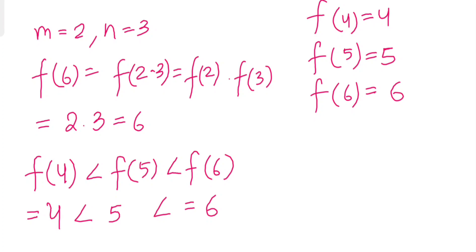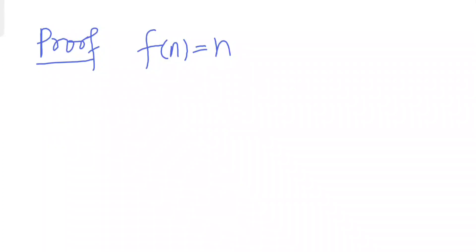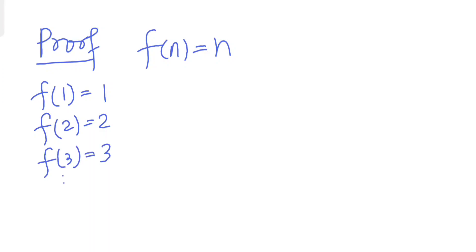Now you can see the pattern — you can follow this infinitely many times and find that f(n) = n for all natural numbers. To finish with a rigorous proof, we can use the induction hypothesis. Suppose we have proven f(1)=1, f(2)=2, f(3)=3, and so on up to f(2k) = 2k.